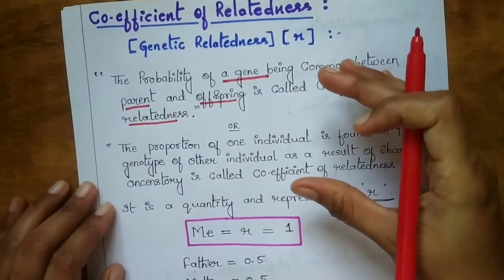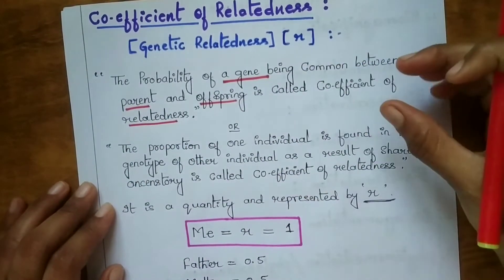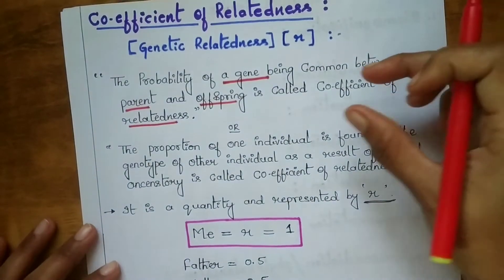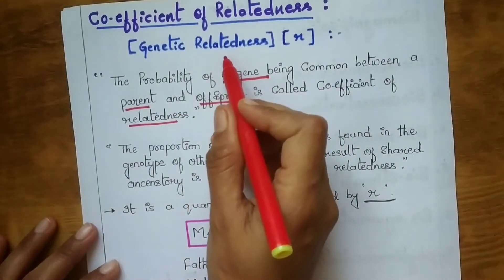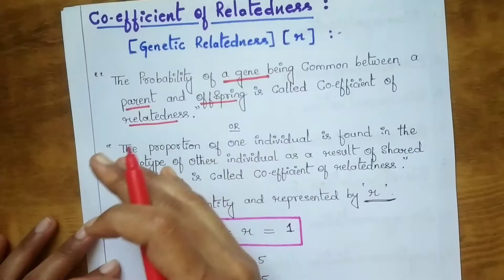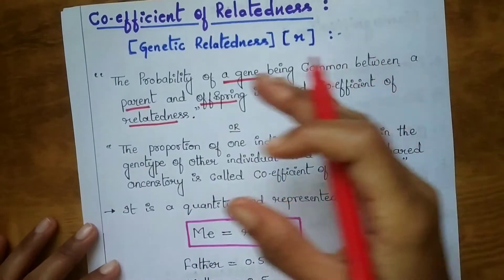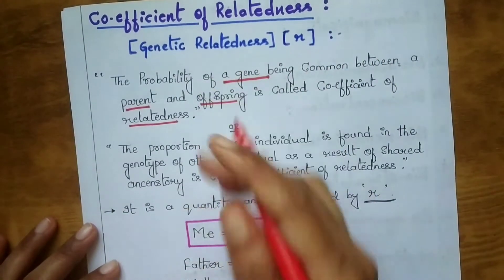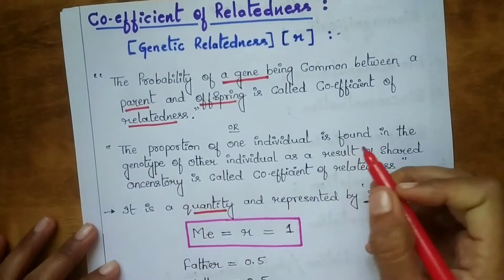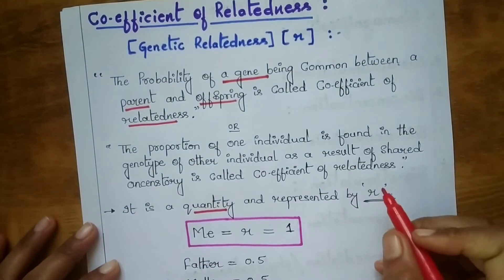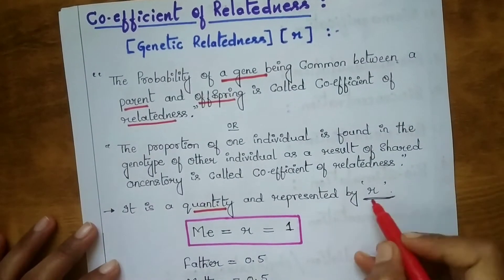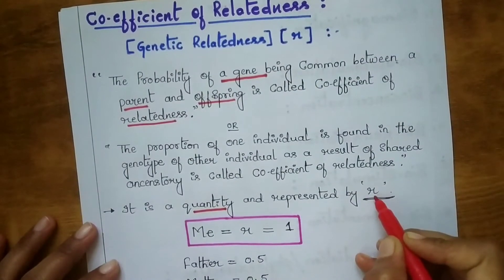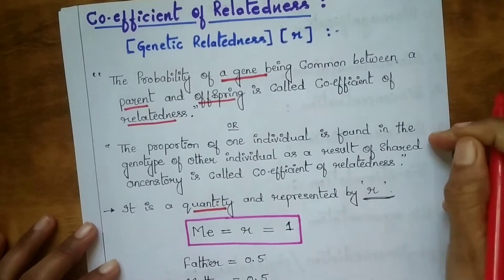This represents genetic relatedness or coefficient of relatedness between a parent and offspring. It is a quantity, and it is represented by the symbol R. You have to remember it is represented by R.